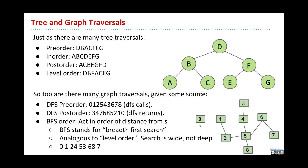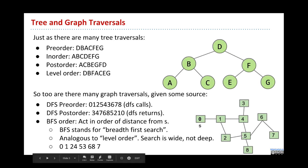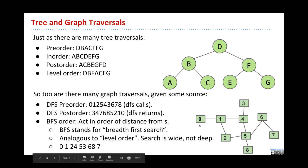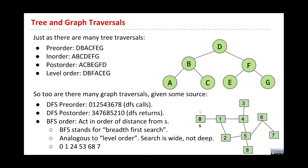DFS pre-order you can think of as the order in which a depth-first search makes its calls. So first you call DFS on 0, then 1, then 2, then 5, then 4, then 3, then 6, then 7, then 8. Post-order is the order in which you return—the first one you return from is 3, and the last one is 0. BFS order is whenever you visit or act on the vertices in order of distance from the source S.